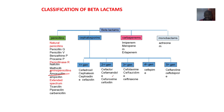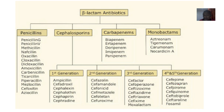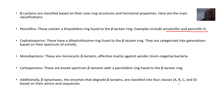Then we have the cephalosporins, broken down into their various generations. Next we have the monobactams — the most popular one is aztreonam, but there are other examples of monobactams too, which we'll cover in the pharmacology lecture.